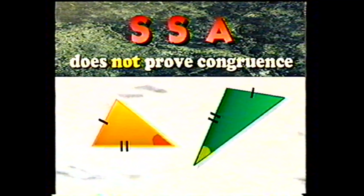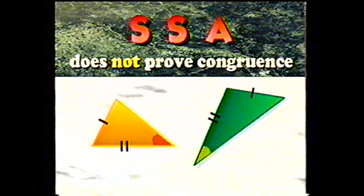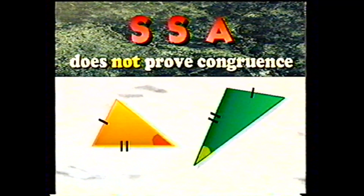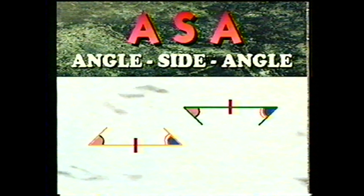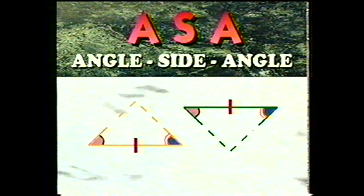In this figure, you can see the SSA or side-side-angle situation. The triangles have two sides and the angle opposite one of the sides congruent, but the triangles are not congruent. The third postulate about congruent triangles is called ASA, which stands for angle-side-angle. If two angles and the included side of one triangle match two angles and the included side of the other, then the triangles are congruent.